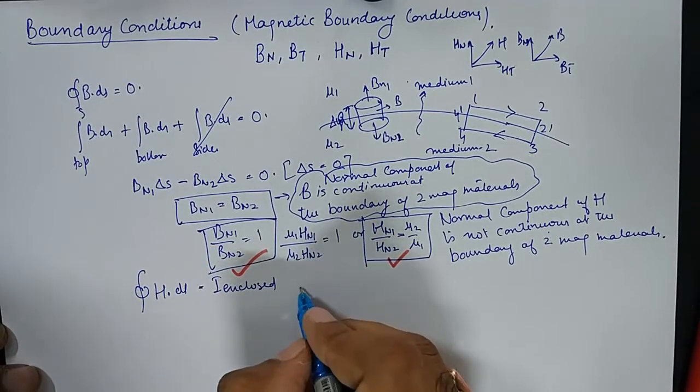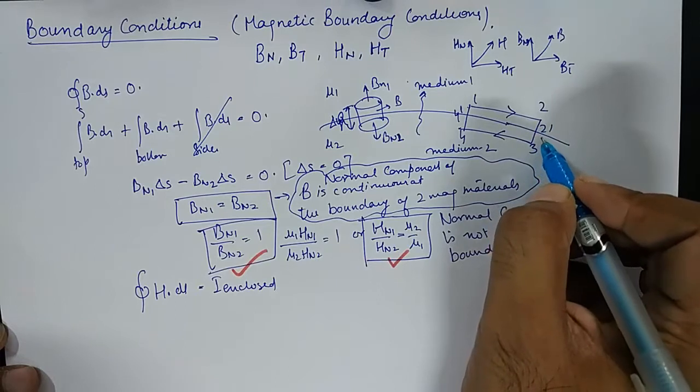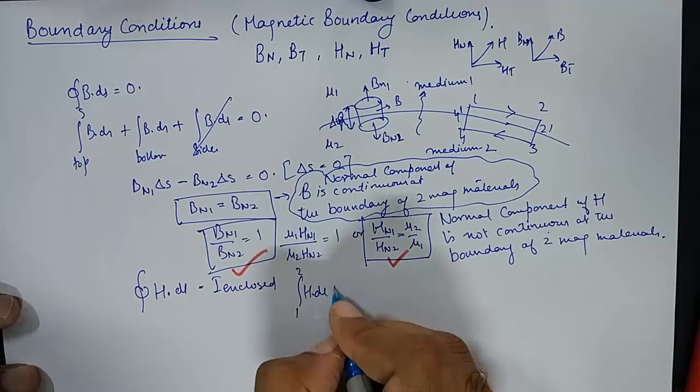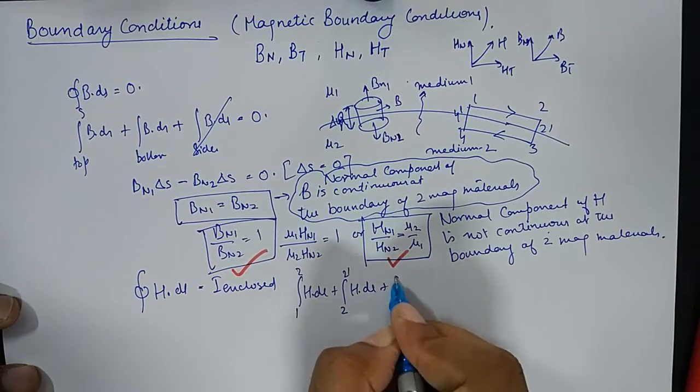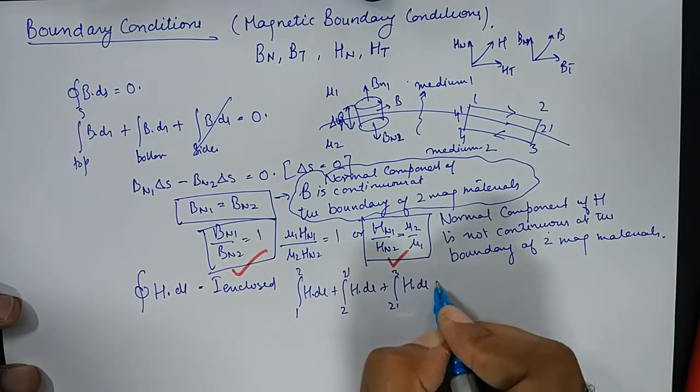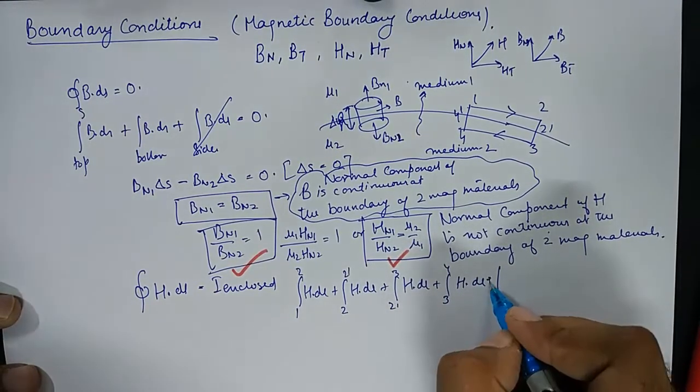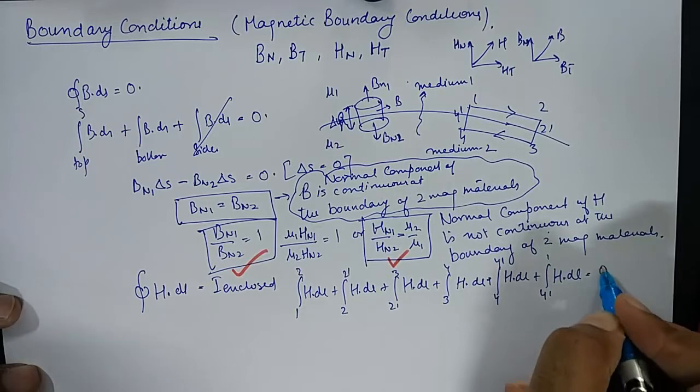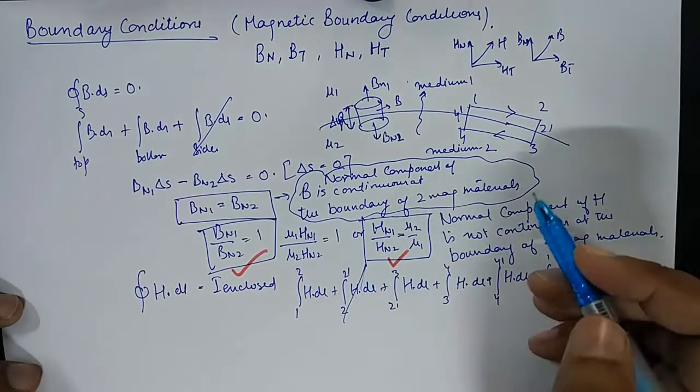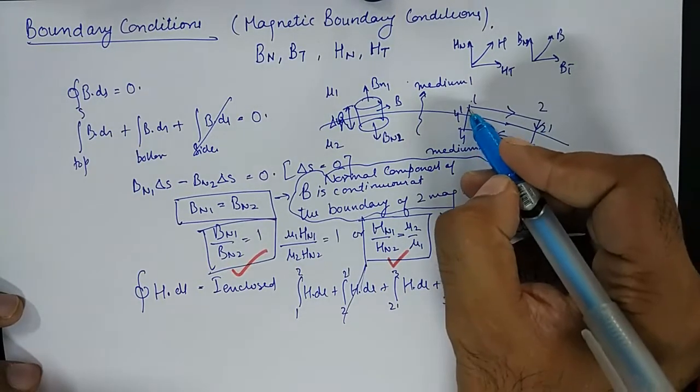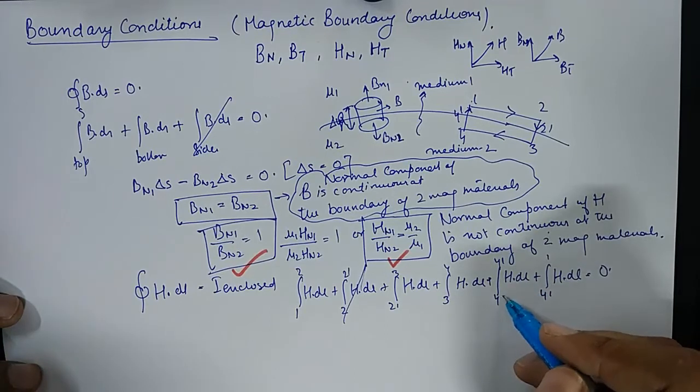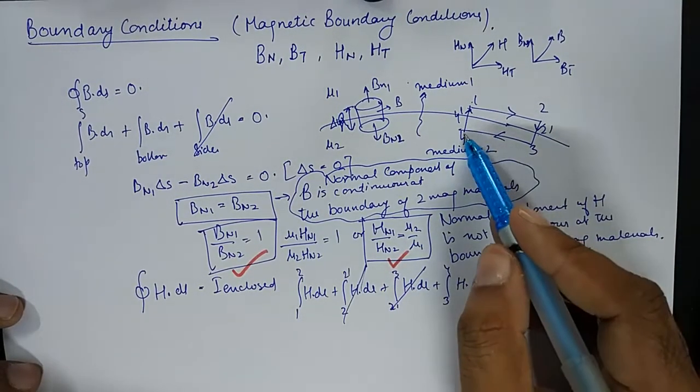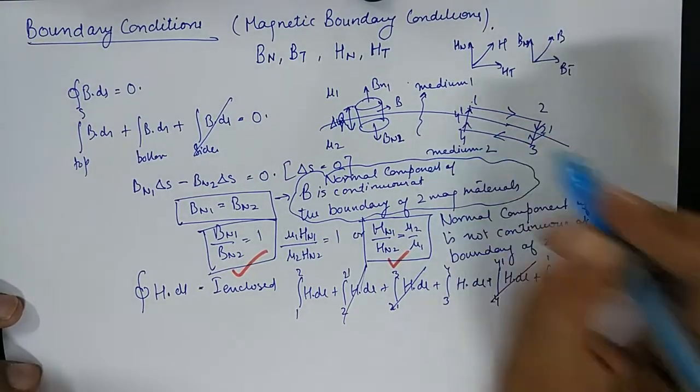When we go full circle from 1 to 2 to 2 dash to 3, 4, 4 dash to 1, we get 1 to 2 H dot DL, 2 to 2 dash H dot DL, 2 dash to 3 H dot DL, 3 to 4 H dot DL, 4 to 4 dash to 1 H dot DL is equal to 0. 2 to 2 dash gets cancelled with 4 dash to 1 because they are equal and opposite in same medium. And 2 dash to 3 gets cancelled with 4 to 4 dash, equal and opposite in same medium.